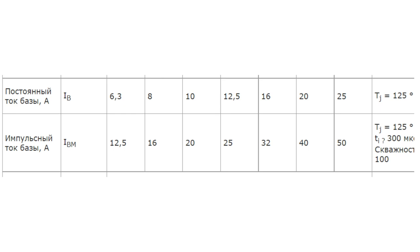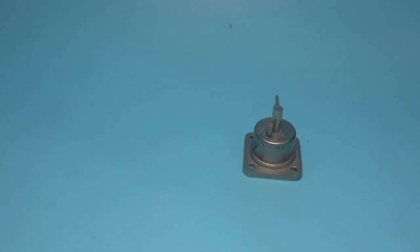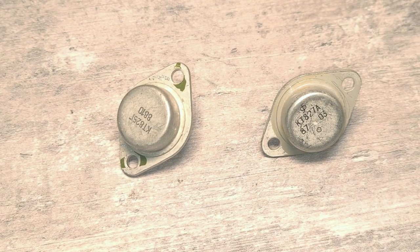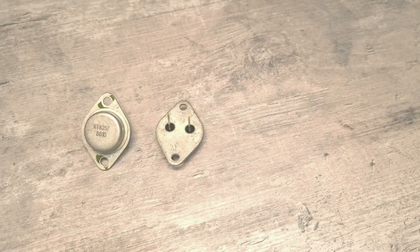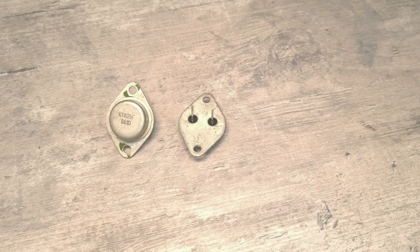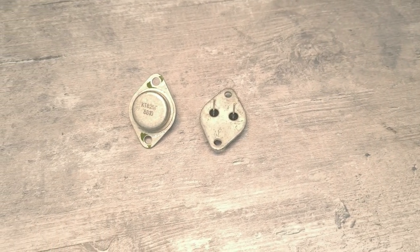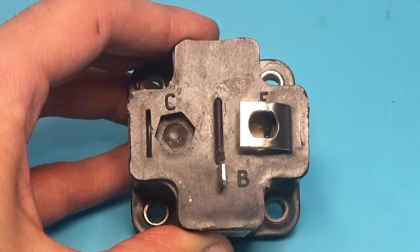The maximum constant current of the base is 25A, the impulse current is already 50A, and this is taking into account the fact that it is a composite transistor. That is, for the swinging of our monster, you can use for example these beautiful powerful and cool complementary pair of KT827 and KT825. I will repeat, only to swing.